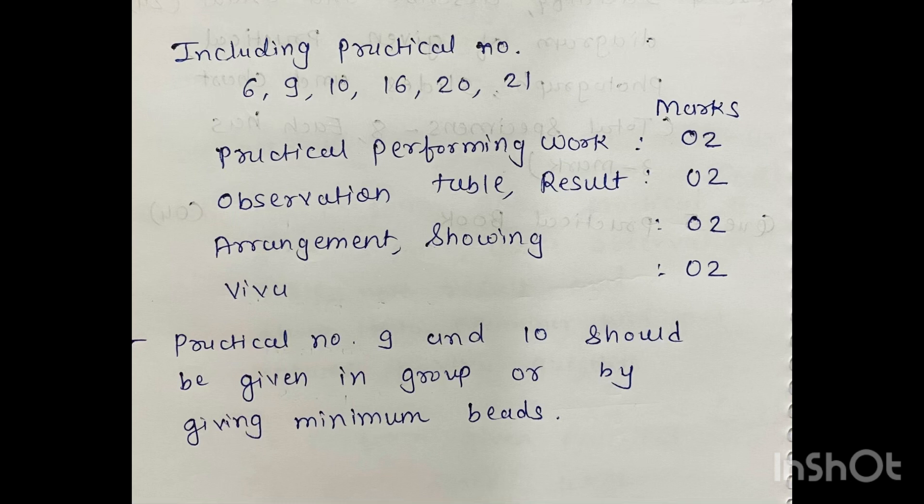For your performance, two marks. Observation table and result, two marks. Arrangement of your practical and showing it to your examiner carries two marks, and viva will be two marks. But practical number 9 and 10 should be given in group or by giving minimum beads in your hybrid cross.